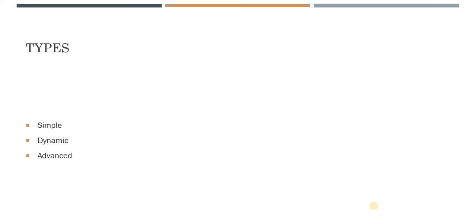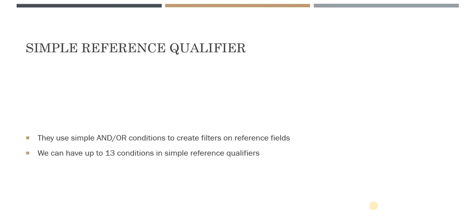There are three types of reference qualifiers: simple, dynamic, and advanced. We will go through them one by one with a demo. The first one is simple reference qualifiers — as the name says, it's a simple filter where you use AND or OR conditions to apply a filter, and you can have up to 13 conditions.